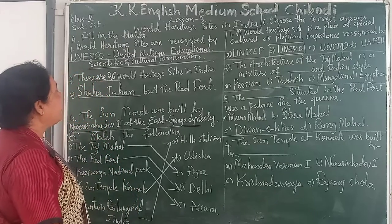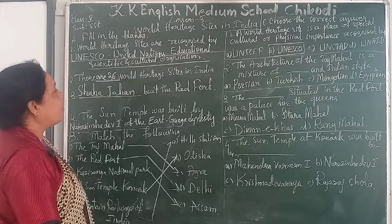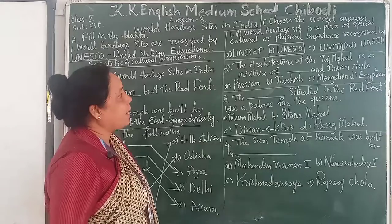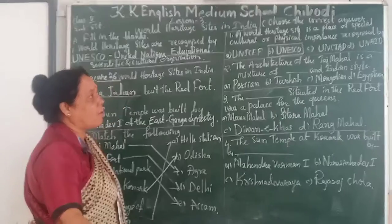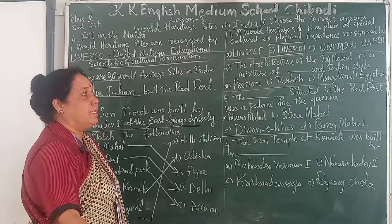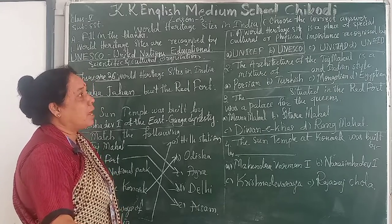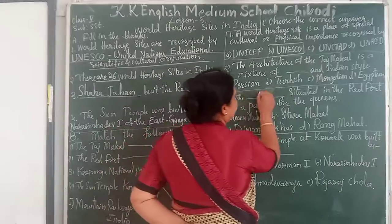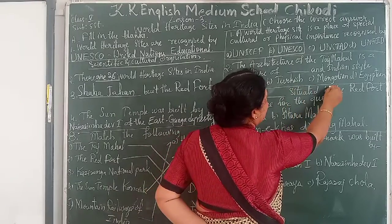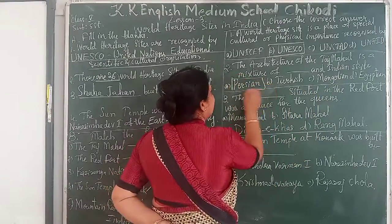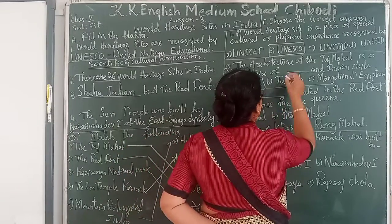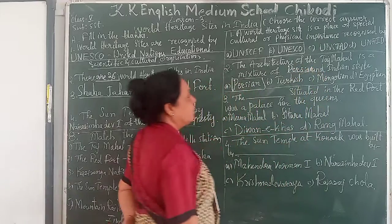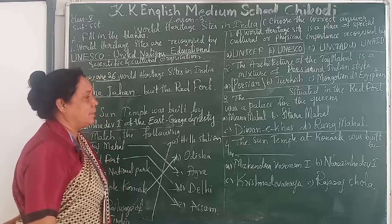UNESCO stands for United Nations Educational, Scientific and Cultural Organization. So the answer for the first question is UNESCO. Second one: the architecture of the Taj Mahal is a mixture of dash and dash style. Options are Persian, Turkish, Mongolian, and Indian. The answer is Persian and Indian style.